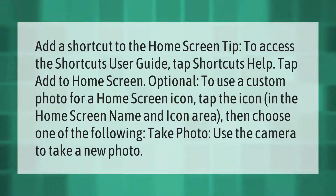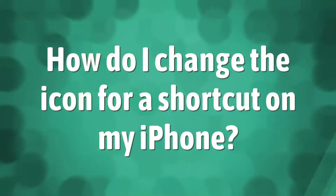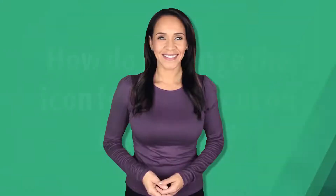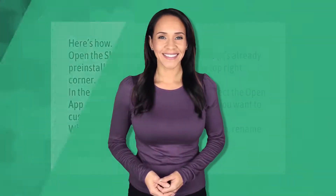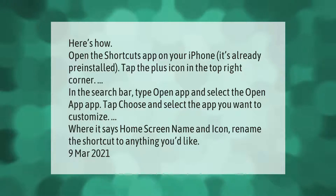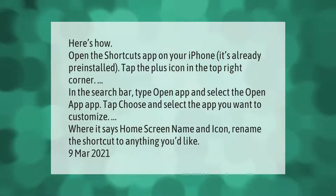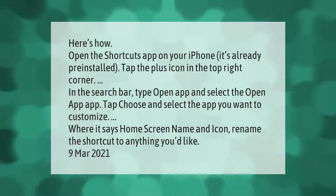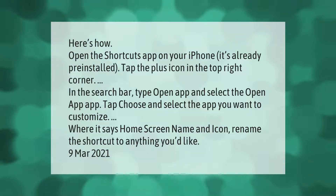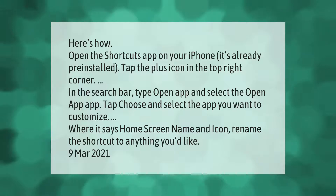Here's how: open the Shortcuts app on your iPhone — it's already pre-installed. Tap the plus icon in the top right corner. In the search bar, type 'Open App' and select the Open App action. Tap Choose and select the app you want to customize. Where it says Home Screen Name and Icon, rename the shortcut to anything you'd like.